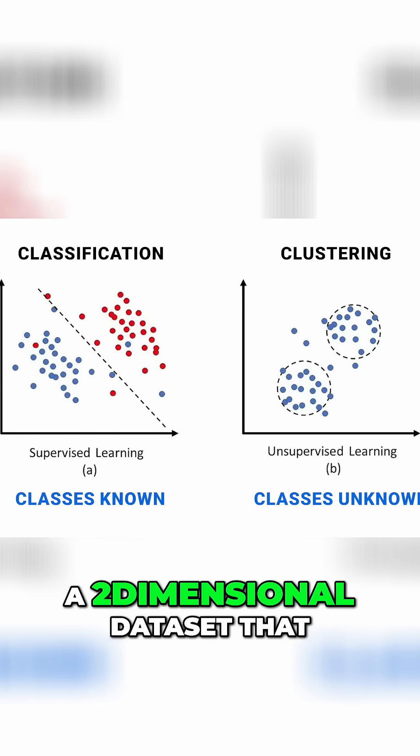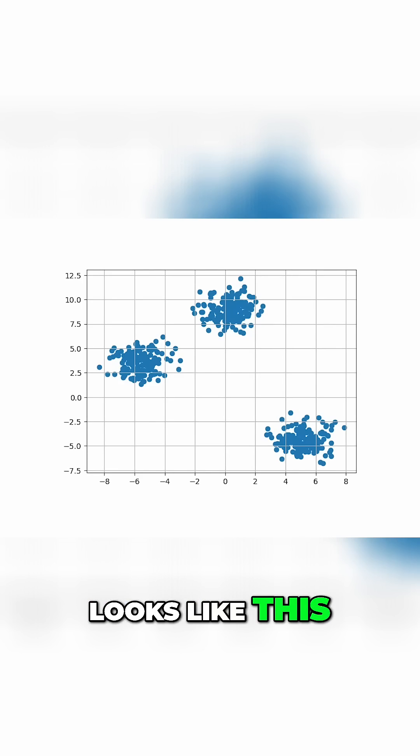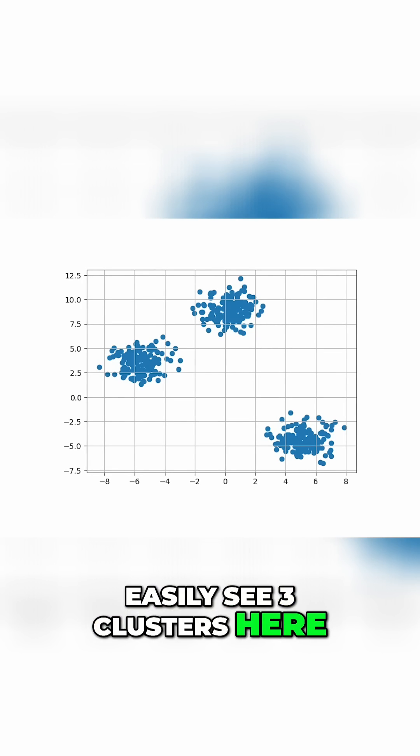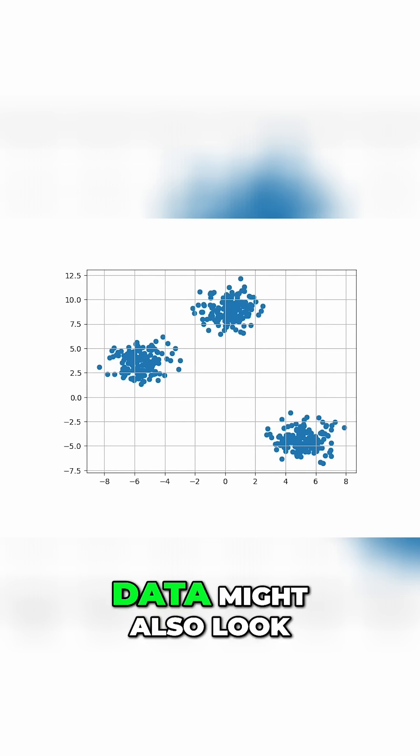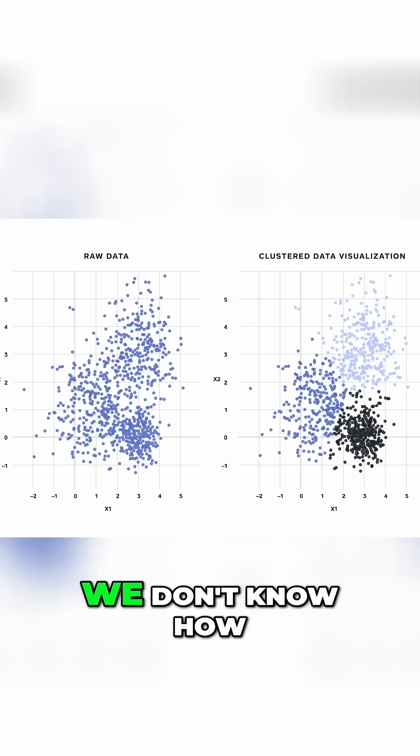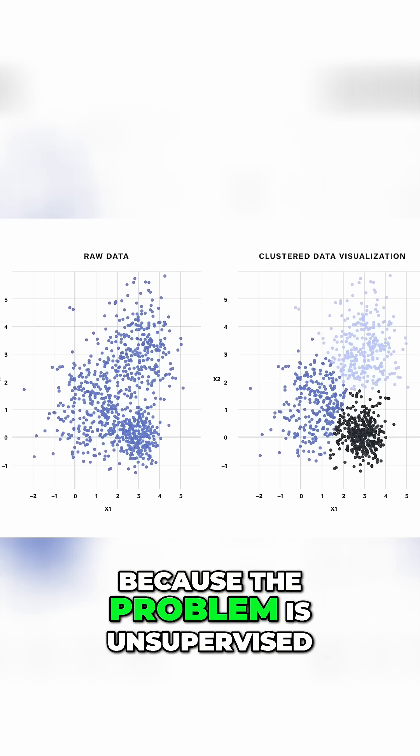For example, we might look at a two-dimensional dataset that looks like this. Any human will probably easily see three clusters here. But it's not always as straightforward, as your data might also look like this. We don't know how many clusters there are because the problem is unsupervised.